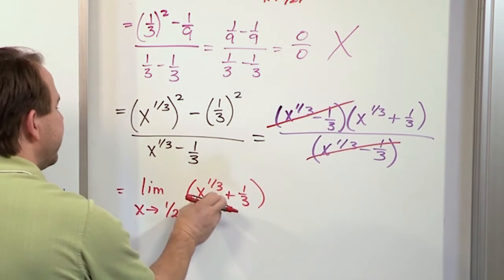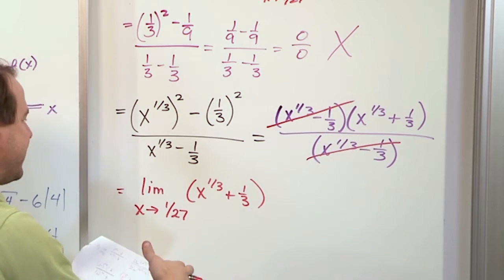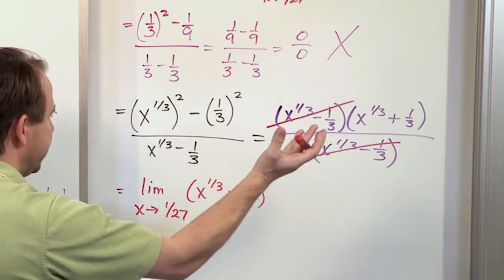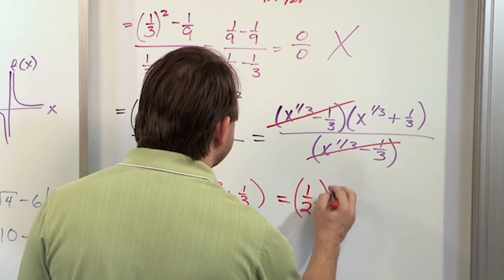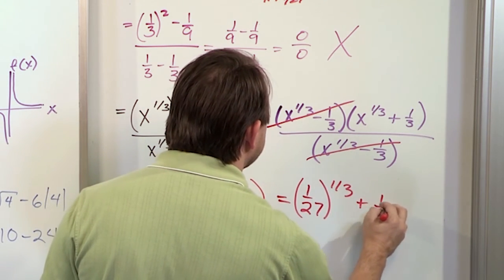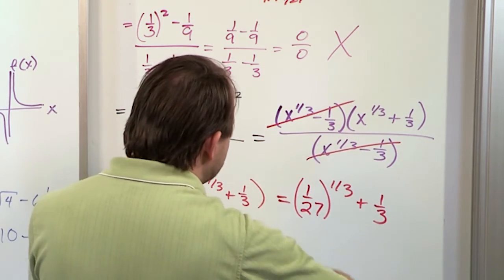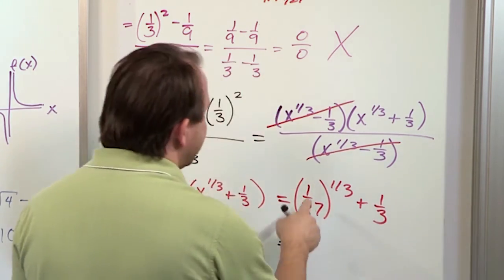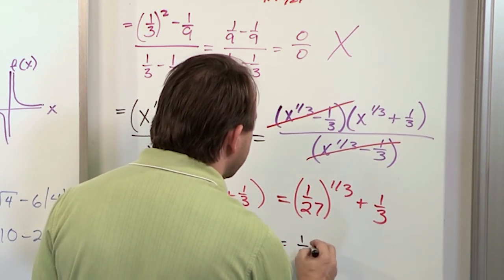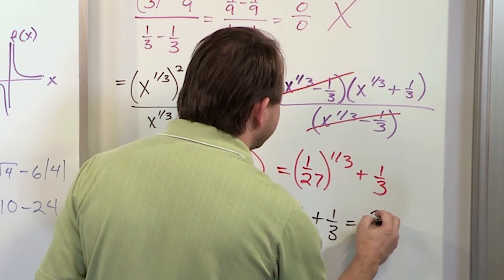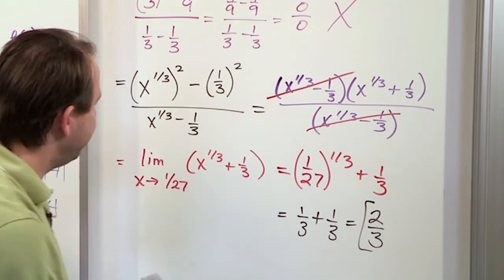Now this is just the sum of two functions, so I do the limit of each separately — which is the same as just plugging in. So what I get is 1 over 27 all raised to the 1 third power, plus 1 third. The 1 third power is a cube root. The cube root of 1 is 1 and the cube root of 27 is 3, giving 1 third. So it's 1 third plus 1 third, which is 2 thirds. And that's the answer.